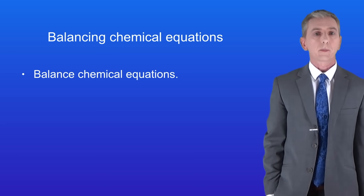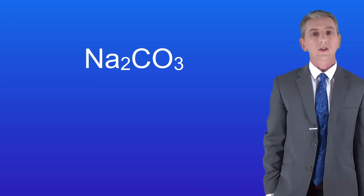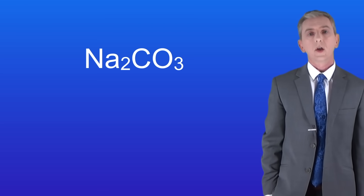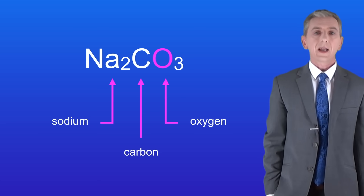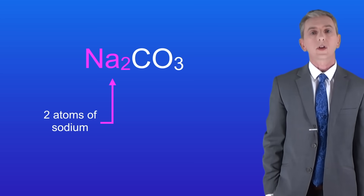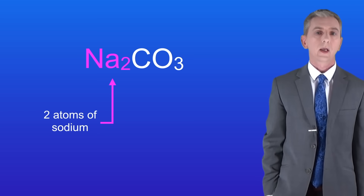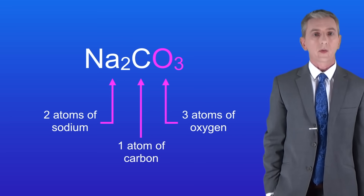Before I start I'm going to recap what's meant by a chemical formula as that will help us later. This shows the formula of the compound sodium carbonate. Capital letters tell us that we have an element, so you can see that we've got three elements in this compound: sodium, carbon and oxygen. The little two on the right of the sodium tells us we've got two atoms of sodium. There's no little number on the right of the carbon so that means we've got one atom of carbon. Finally the small three on the right of the oxygen tells us that we've got three atoms of oxygen.